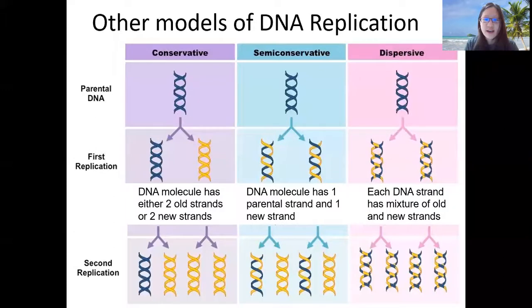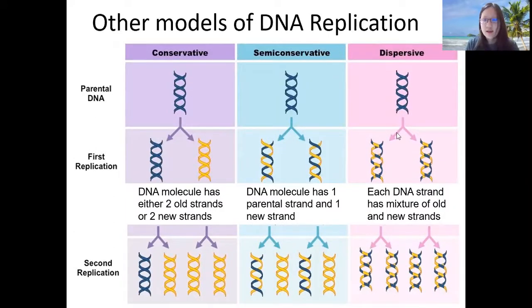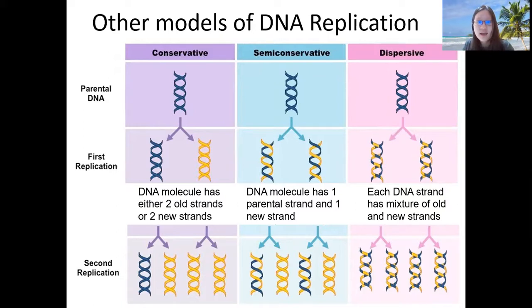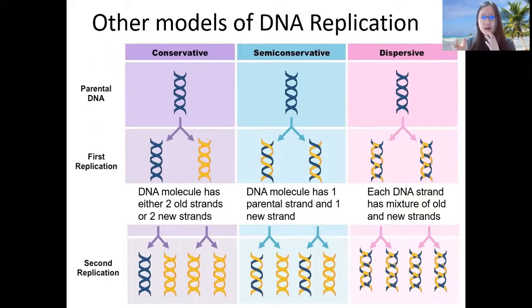We left off here, and the idea is that there are other models of DNA replication. These models are actually set up as hypotheses before we confirm that it was DNA replication that is semi-conservative. So basically, these are different ways scientists thought it could work, and then later on they confirmed that it was semi-conservative DNA replication that was true.